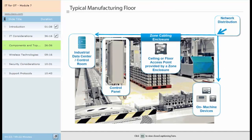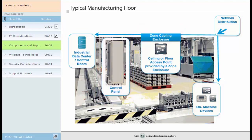The physical architecture for a typical manufacturing enterprise is located in multiple areas that have unique environmental, security and performance considerations. Usual physical infrastructure architecture areas include: industrial data center and control room, network distribution, zone cabling enclosure, control panel, and on-machine devices. These physical locations can have differing needs based on the manufacturing operation being performed. Experts estimate that 50-90% of network disruptions are due to problems with the physical layer.